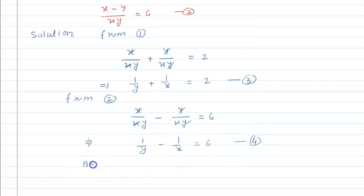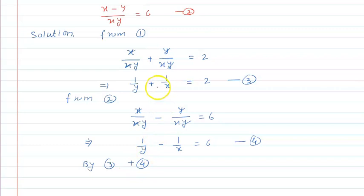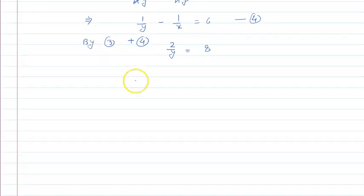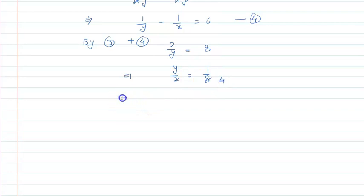Now we add both equations so that the x term cancels and we get the value of y. By adding equation 3 plus equation 4, the 1 upon x terms cancel, and 1 upon y plus 1 upon y gives 2 upon y, which equals 2 plus 6, that is 8. Taking the inverse, y upon 2 equals 1 upon 8, which simplifies 4 times, so the value of y is 1 upon 4.